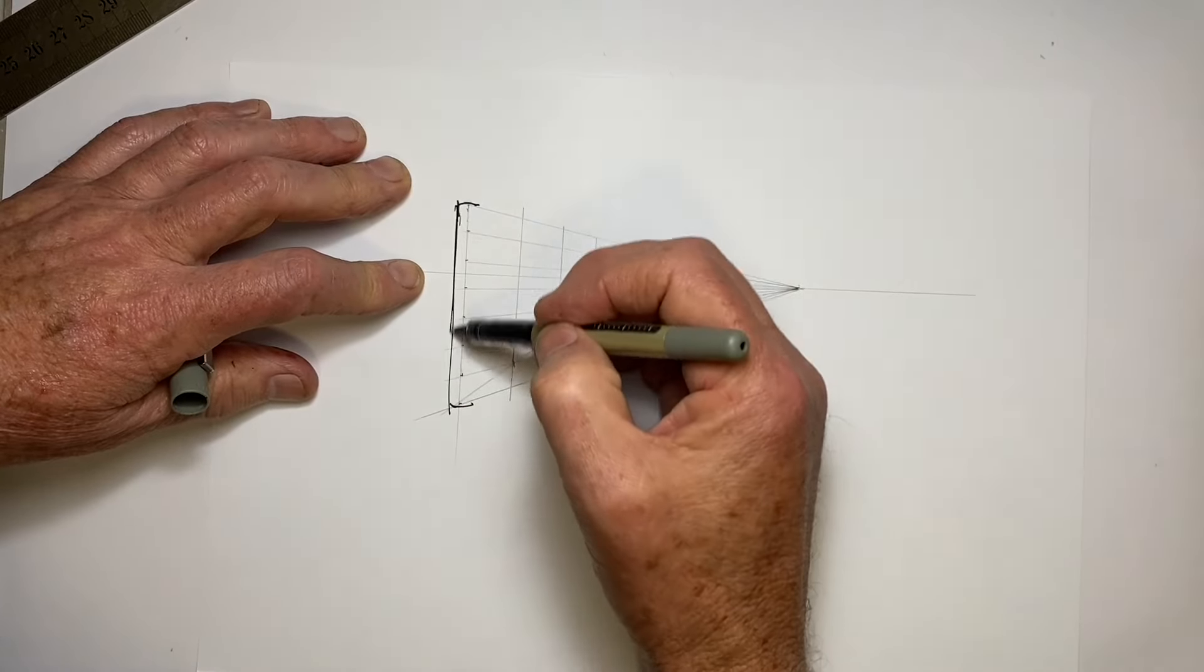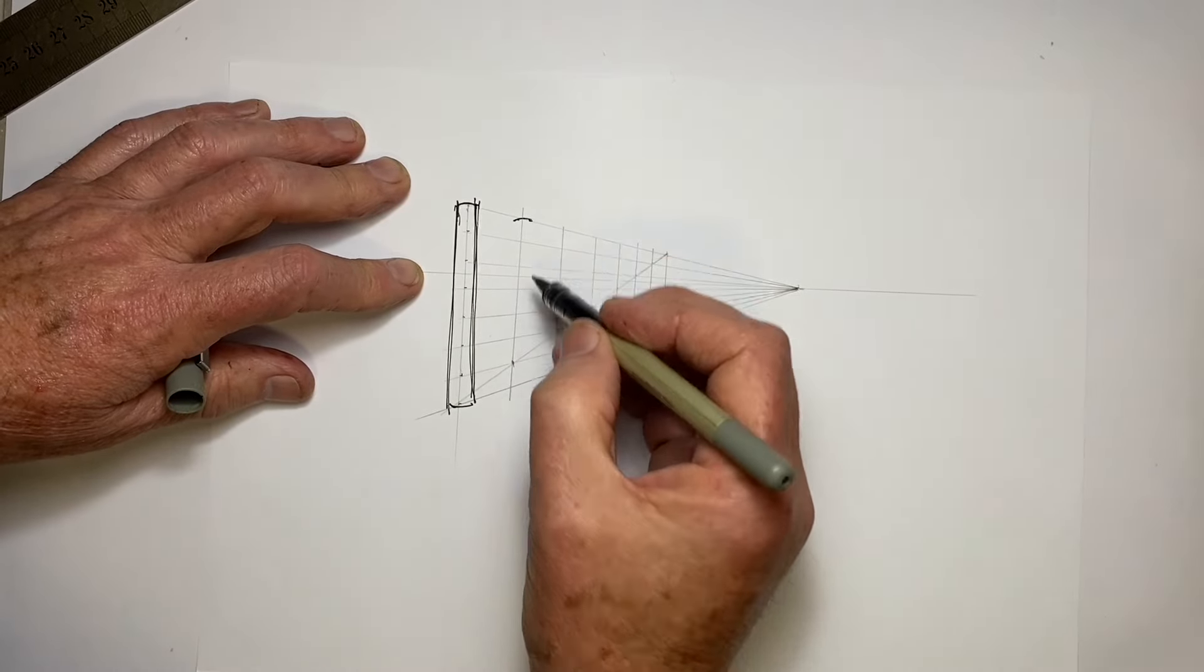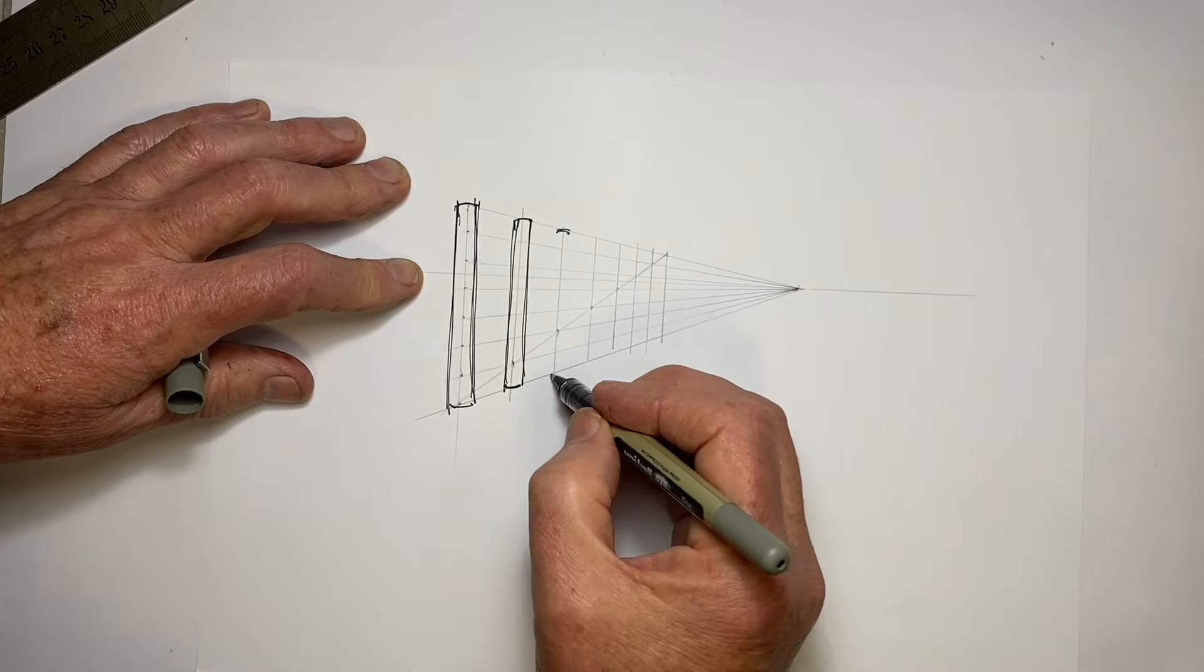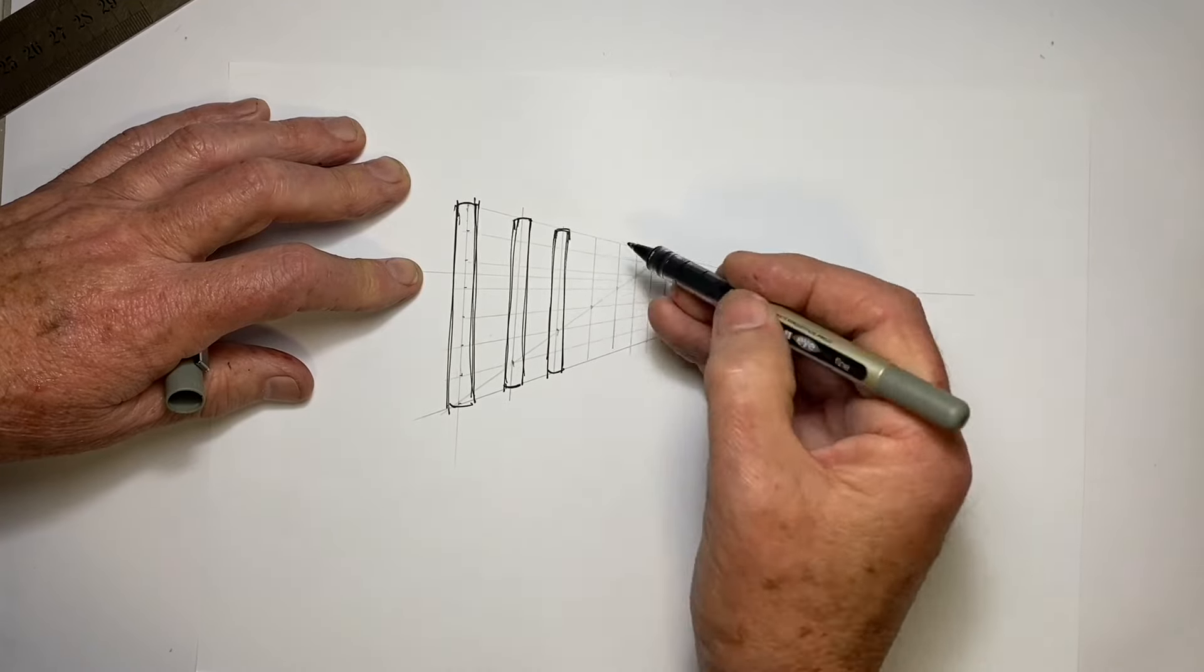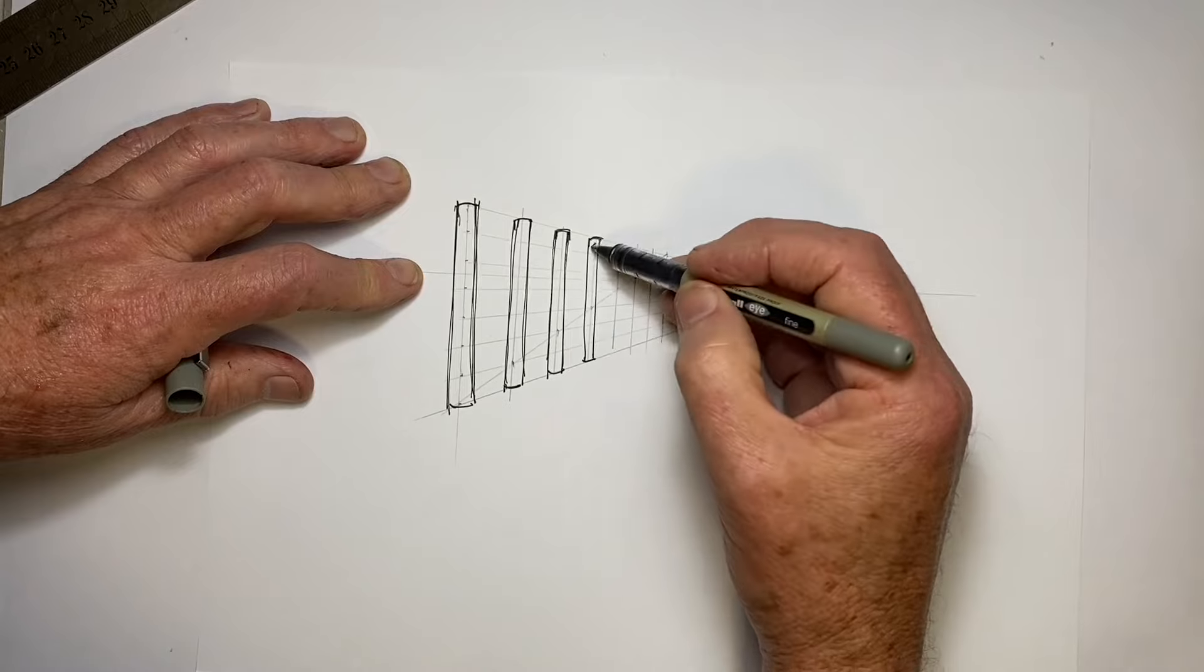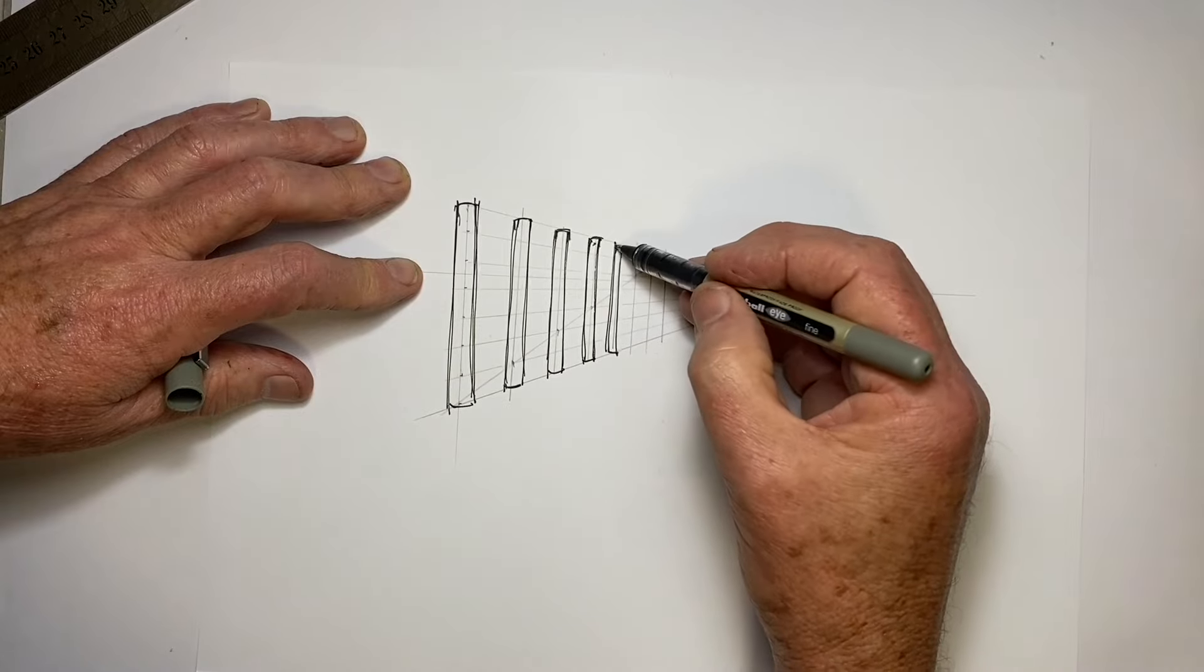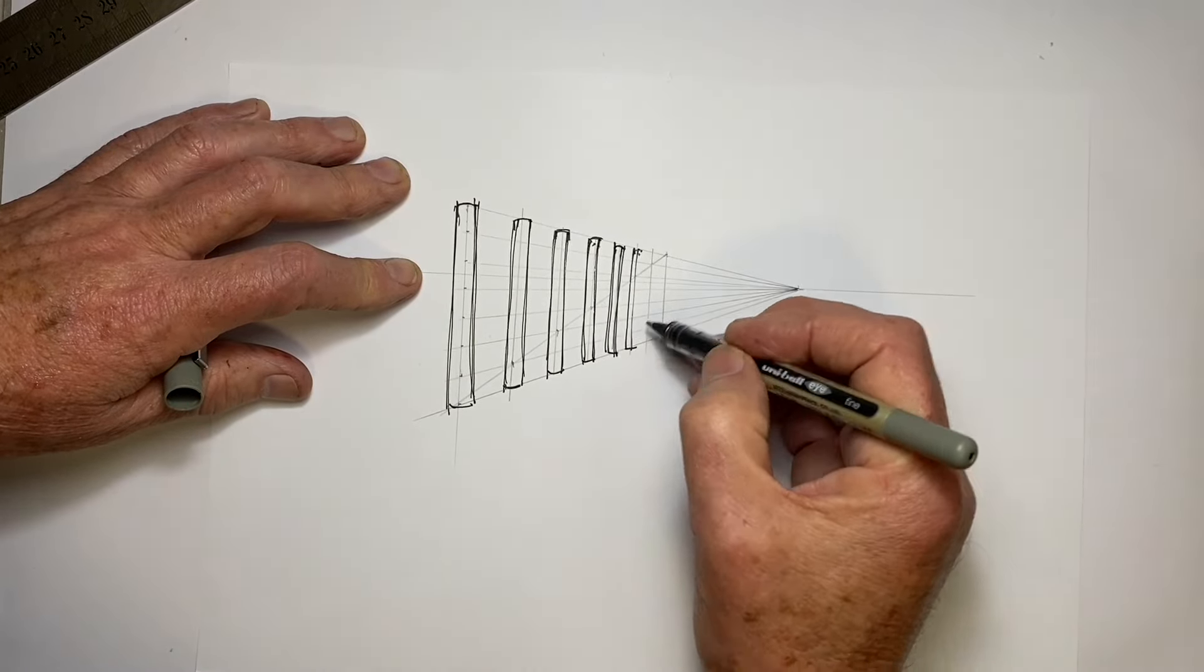The important thing when drawing elements such as this is that we keep the proportions correct. The biggest temptation is that we make the columns pretty much the same width as we go along. In fact, the columns have to get thinner and thinner as they get shorter and shorter so that the proportions stay correct.